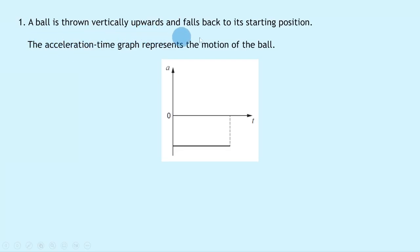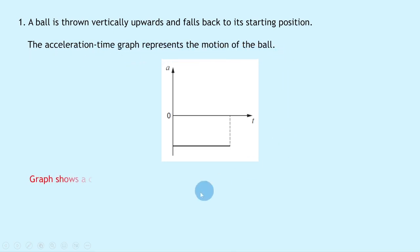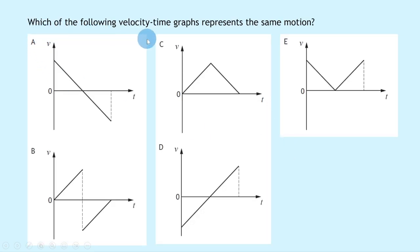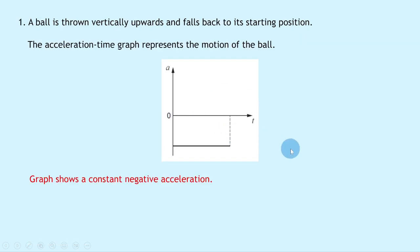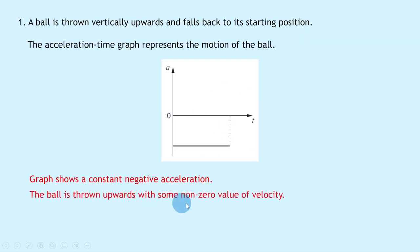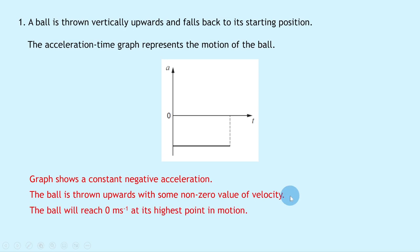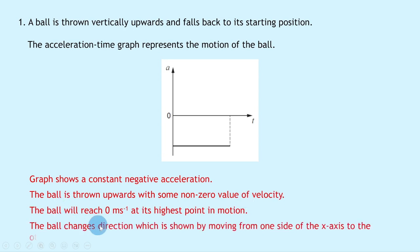Question 1 says a ball is thrown vertically upwards and falls back to its starting position. The acceleration-time graph represents the motion of the ball. The graph shows a constant negative acceleration. Which of the following velocity-time graphs represents the same motion? The ball is thrown upwards with some non-zero velocity, reaches 0 m/s at its highest point, then starts falling back downwards. The direction change is shown by moving from one side of the x-axis to the other on a velocity-time graph.